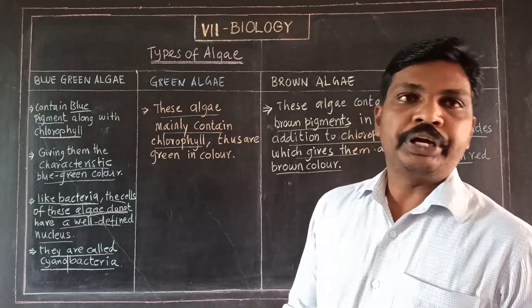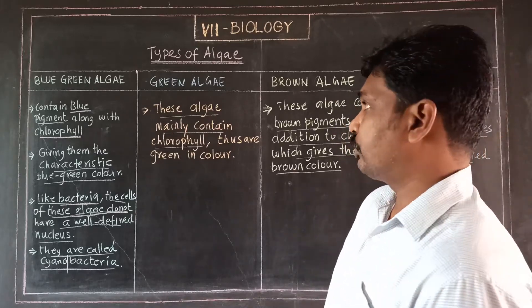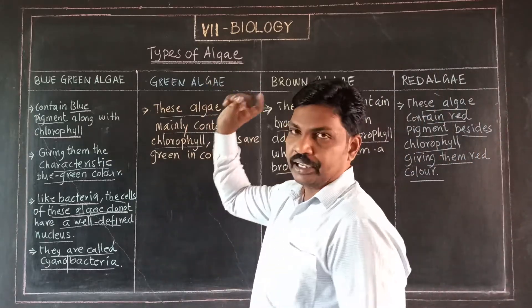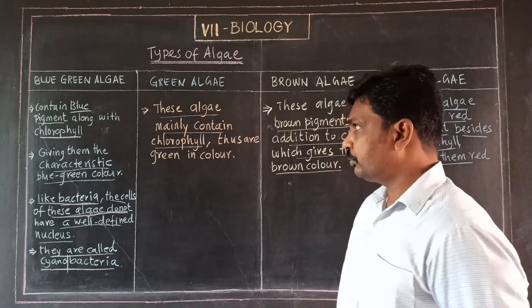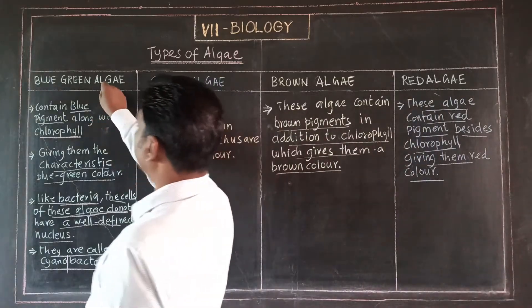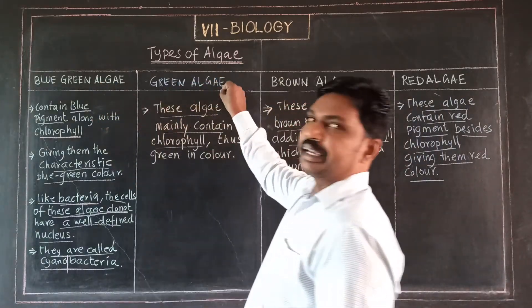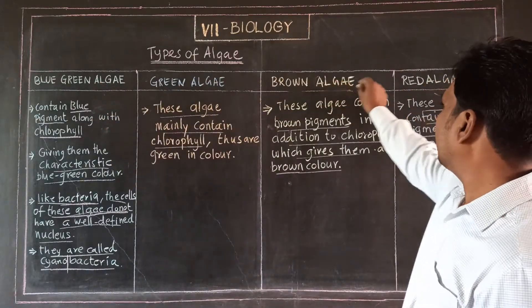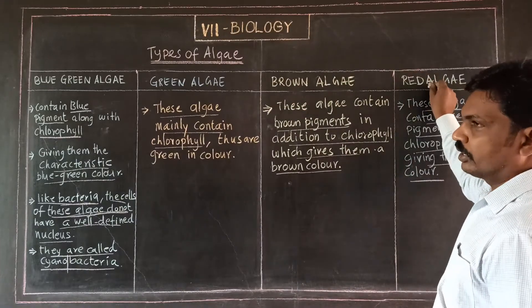Today we are going to discuss the types of algae. There are 4 types: blue-green algae, green algae, brown algae, and red algae.